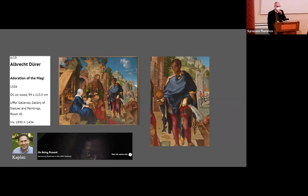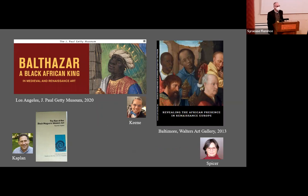In an Adoration of the Magi by Ghirlandaio from the same 1480s date, you see three white kings, but one of the pages — an attendant shown as a Black boy in fine, colorful robes. I suspect that in the Tornabuoni home where this painting originally hung, there was also an enslaved African with similar clothing. North of the Alps in Germany where Albrecht Dürer worked, and in Flanders, starting in the 1450s, the youngest king is often shown as a Black man.